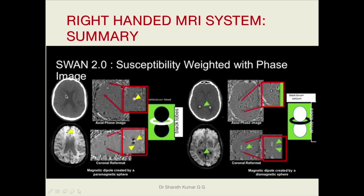On this CT image you can see choroid plexus calcification, and on the MRI susceptibility-weighted magnitude image there are areas of blooming. The axial and coronal reformatted images show a black torus and white dumbbell, indicating it is created by a diamagnetic substance — that is, calcium.